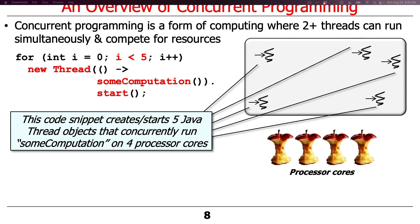Here's a code snippet illustrating one way to start threads. We have a Java index-based for loop that runs five iterations. Each time through, it creates a new thread, gives that thread some computation to run, and starts the thread. This particular environment will be running those computations across five threads atop four processor cores.